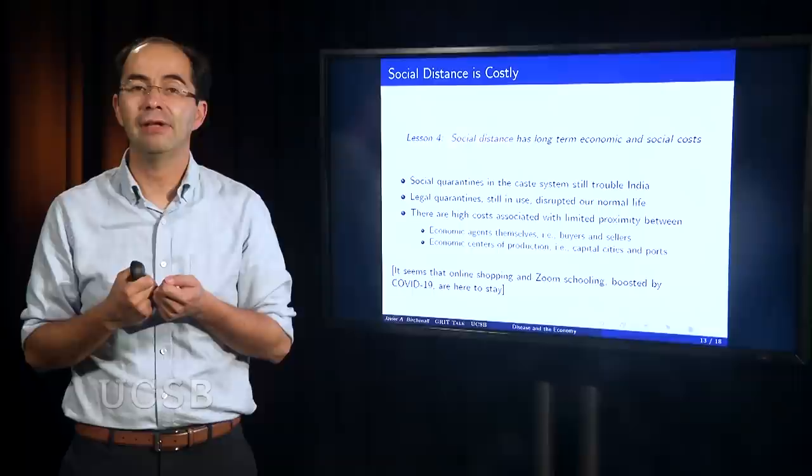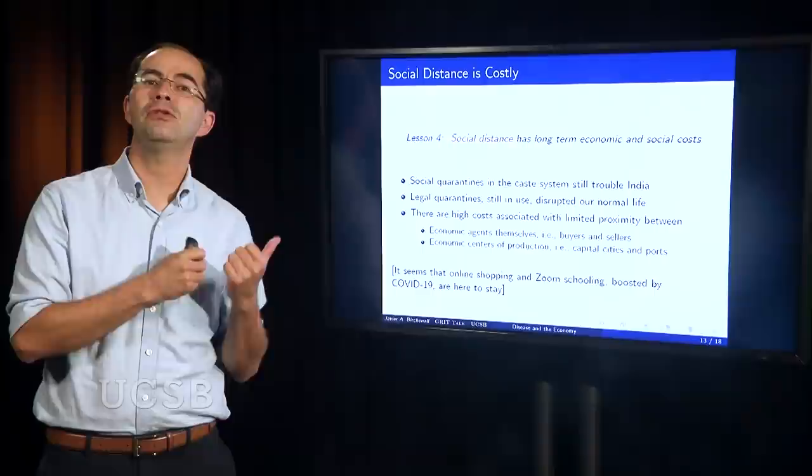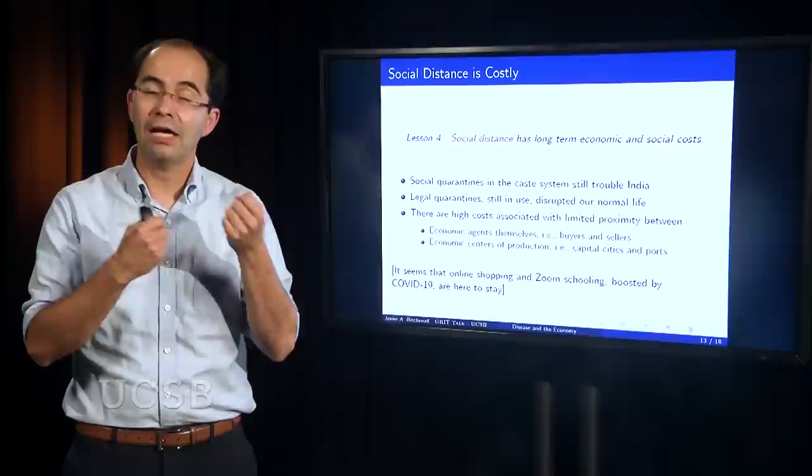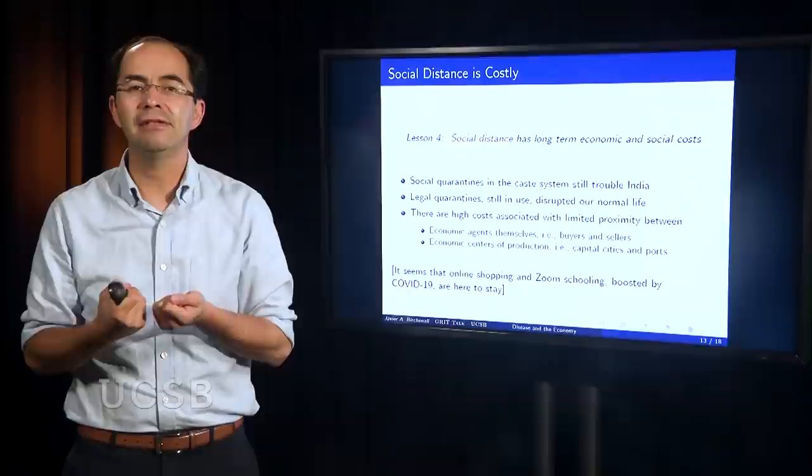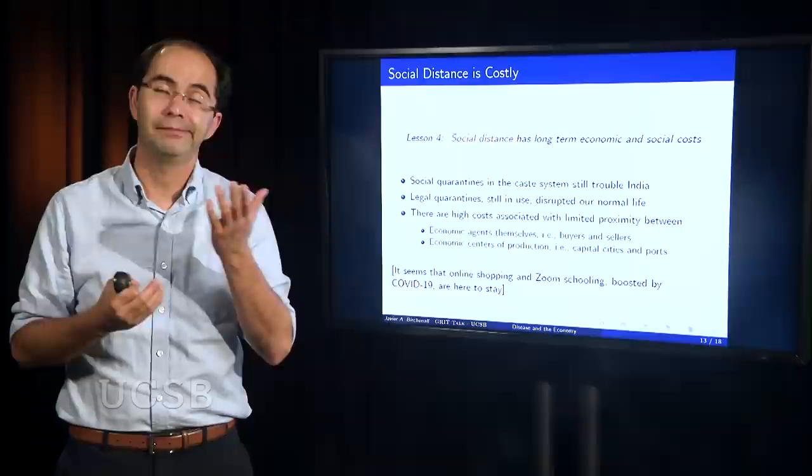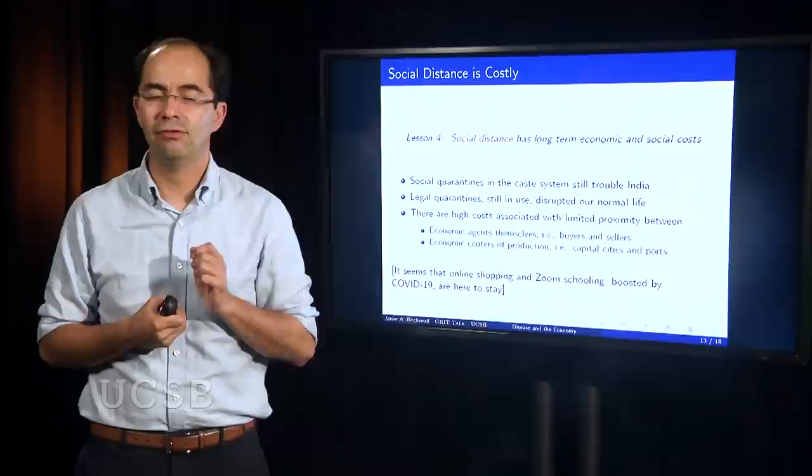Now, it's costly because whenever we introduce separation, separation between economic agents, buyers and sellers, we are wasting resources. It's becoming more expensive for them to agree and to gain from trade. And when we move the center of production, let's say, from the lowlands to the highlands with capital cities in Latin America, Ethiopia and other tropical areas, we introduce transportation costs. So those changes, those changes that responded to particular instances in the past, created a sense of path dependency. And that is still relevant today.